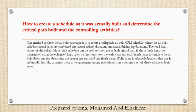One method to show the as-built critical path is to create a collapsible as-built CPM schedule where the as-built schedule actual dates are converted into actual activity durations and actual driving lag durations. The total float values of the collapsible as-built schedule can be used to show the as-built critical path if the as-built logic was determined using enhanced logic rules that not only use the early start and early finish dates to simulate the as-built dates but also determine the proper late start and late finish dates. While technically feasible, currently there is no agreement among practitioners on a common set of these enhanced logic rules.